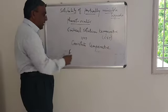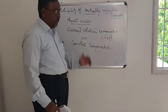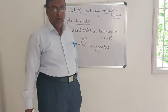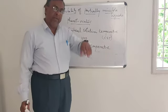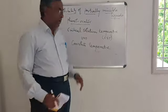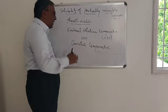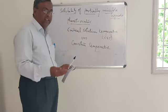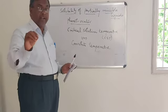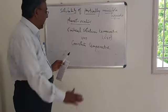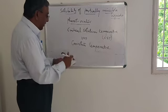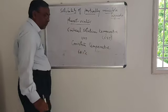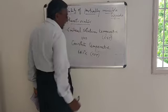This critical solution temperature, or consilute temperature, is different for different immiscible liquid pairs. For example, in the case of the phenol-water system, at room temperature they are immiscible. When temperature slowly increases, miscibility increases, and at a particular temperature they become completely miscible. This critical solution temperature for the phenol-water system is 68.1°C.